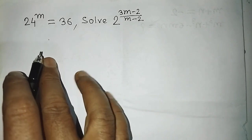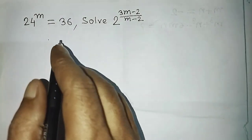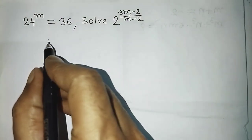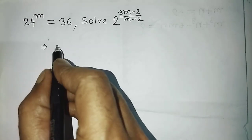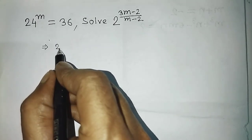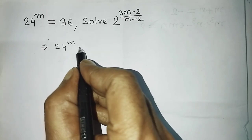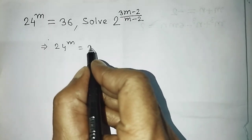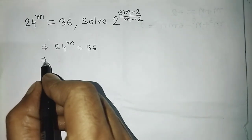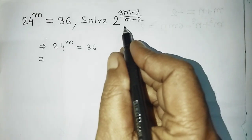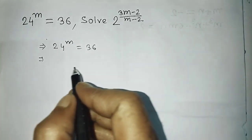First, look here — 24 whole to the power m is equal to 36. You need to write down this equation. From this equation, we need to find the value of 2 to the power 3m minus 2, divided by m minus 2.